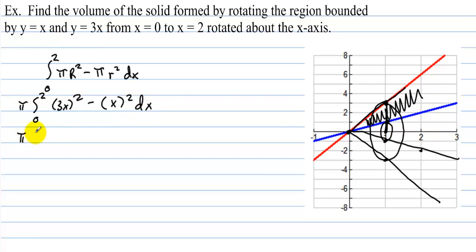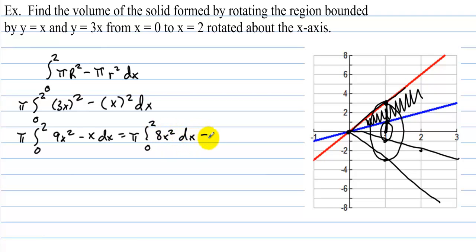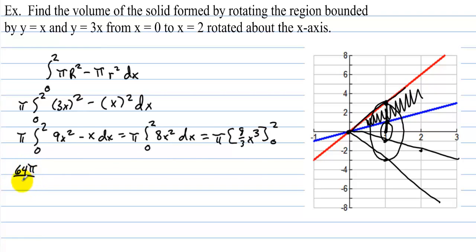Now everything's in x and we can just do the integration. We have 9x squared minus x squared dx, which equals pi times the integral from 0 to 2 of 8x squared dx. That equals pi times 8 thirds x to the third from 0 to 2. We get pi times 64 over 3, and then minus 0, giving us 64 pi over 3.